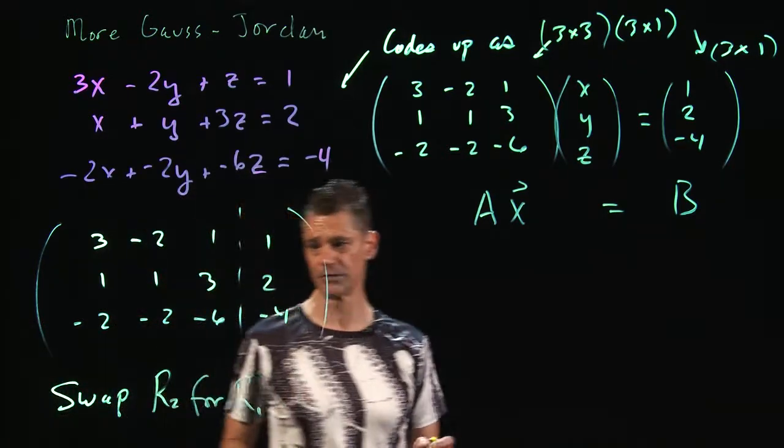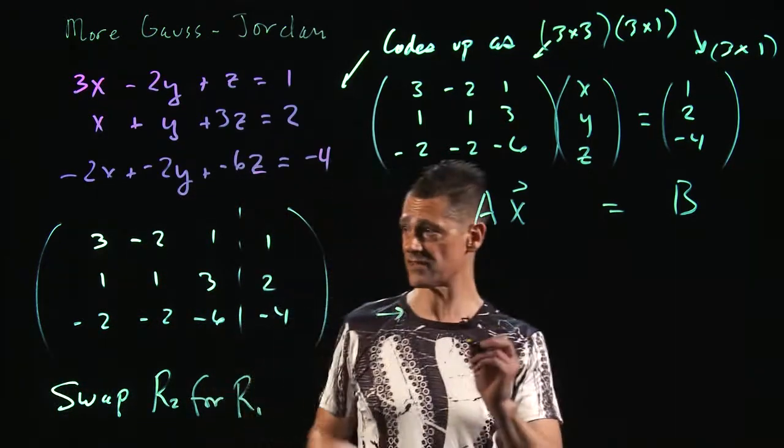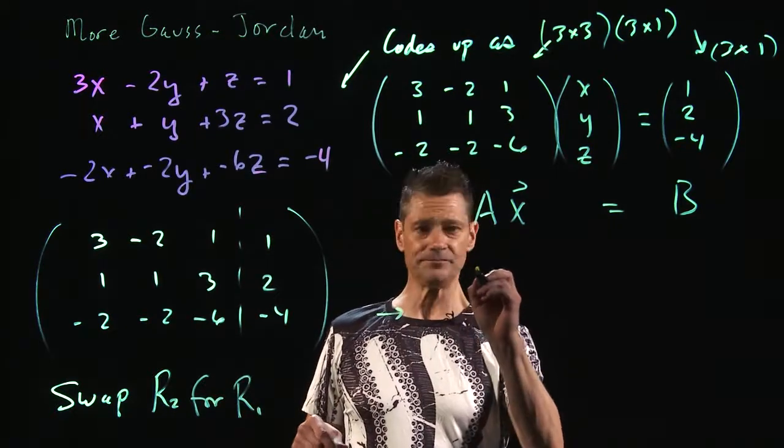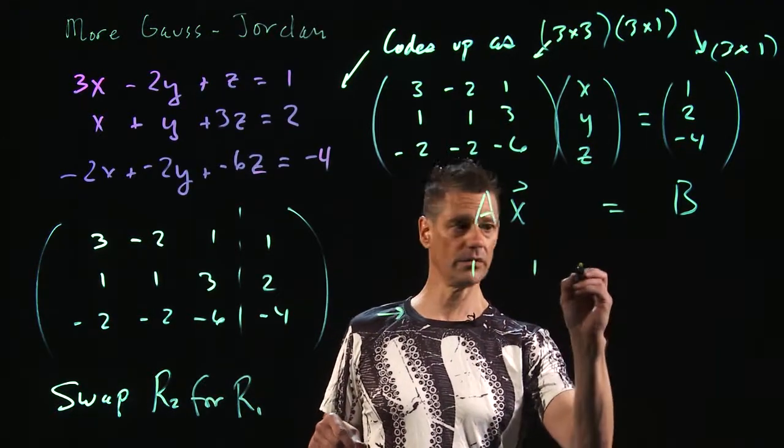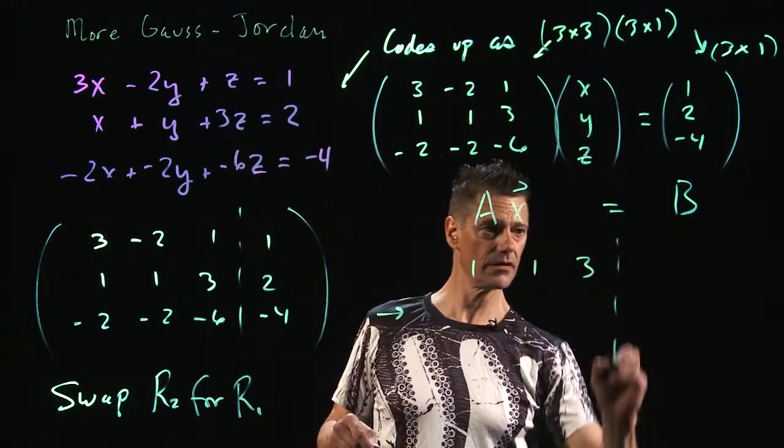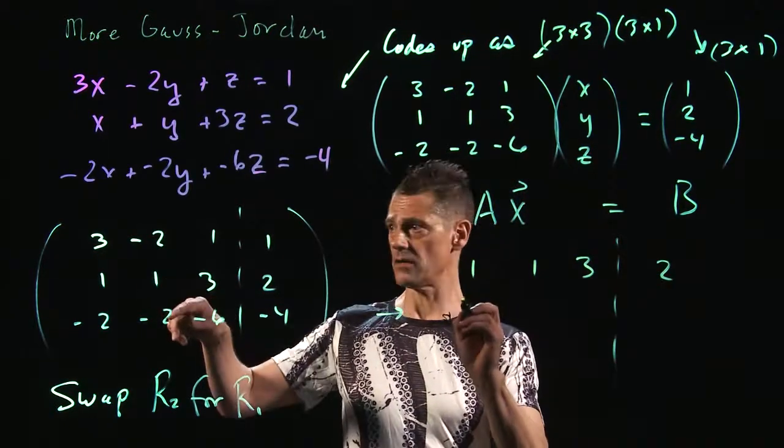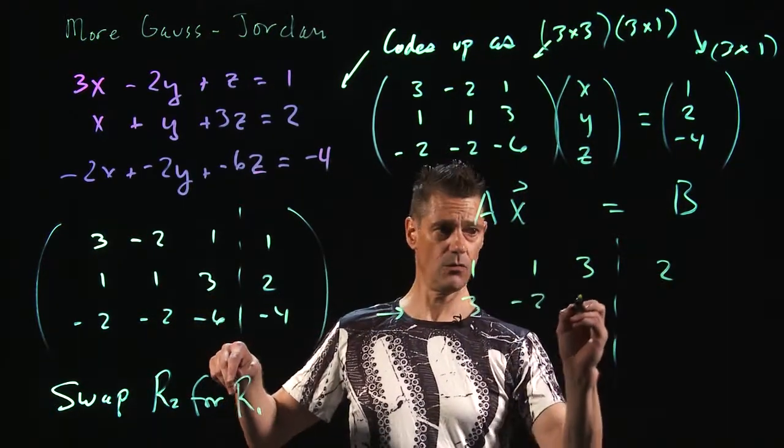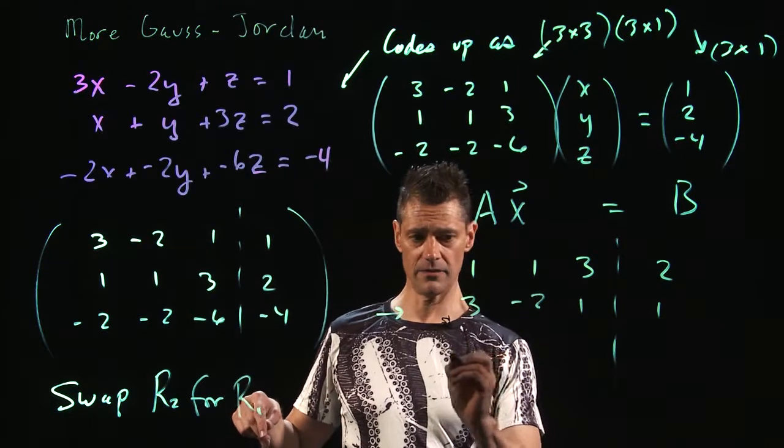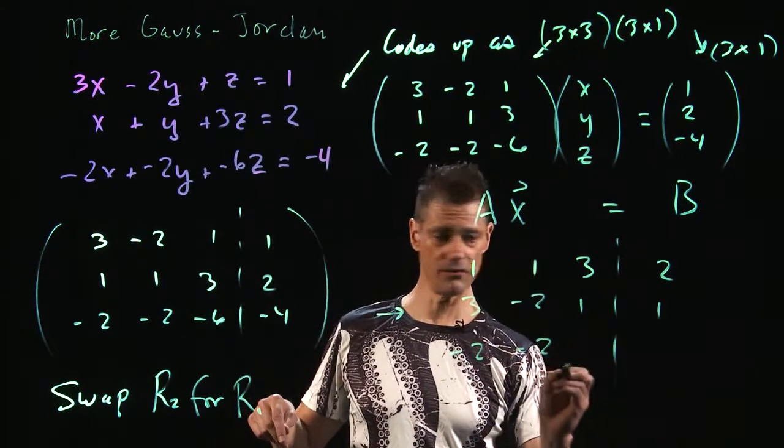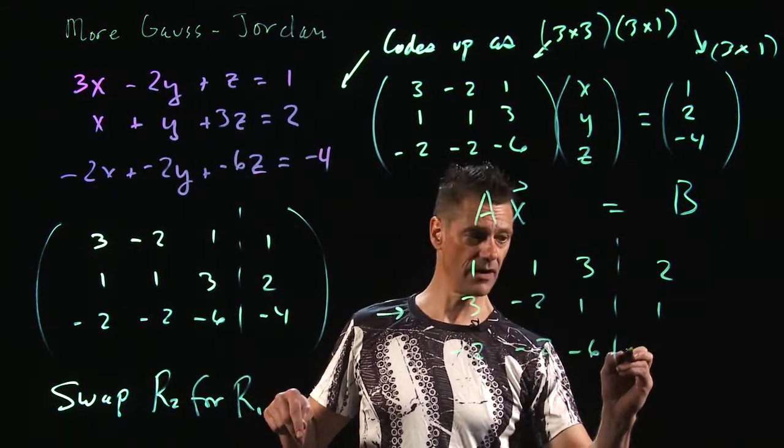So the next matrix will look like this: 1, 1, 3, 2; 3, -2, 1, 1; and -2, -2, -6, -4.